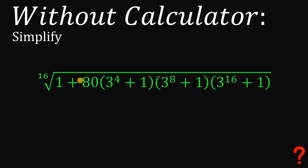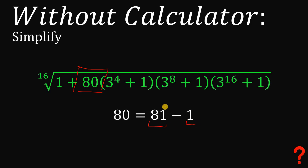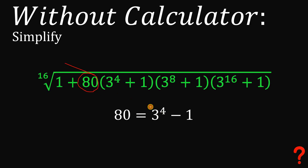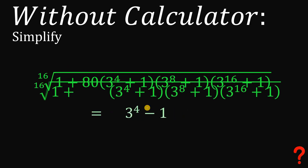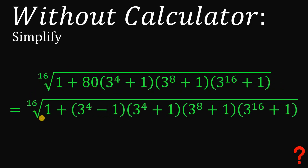To answer this question without the use of any calculator, notice this number 80. Because 80 can be written as 81 minus 1. And what is special about 81 minus 1? Because 81 can be written as 3 raised to the power of 4. So we can replace this 80 with its value: 3 raised to the power of 4 minus 1. Our original expression becomes the 16th root of 1 plus (3 raised to the 4th power minus 1), multiplied by 3 raised to the 4th power plus 1, multiplied by 3 raised to the 8th power plus 1, multiplied by 3 raised to the 16th power plus 1.